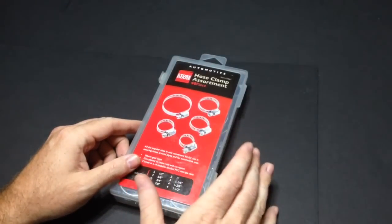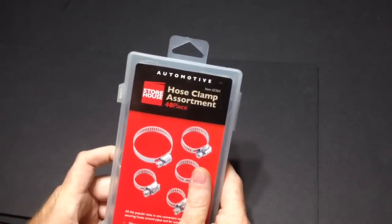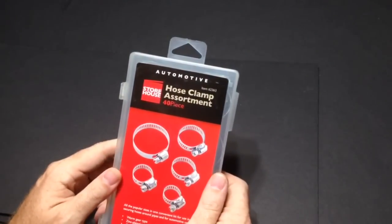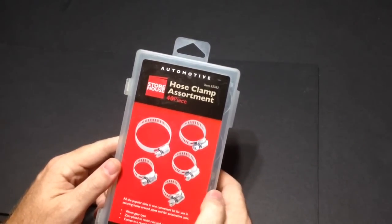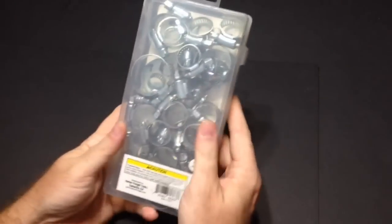This is actually my second box. These are called Storage House automotive hose clamps assortment. There's 40 hose clamps in here. These are around five dollars, give or take, and they're made in China.